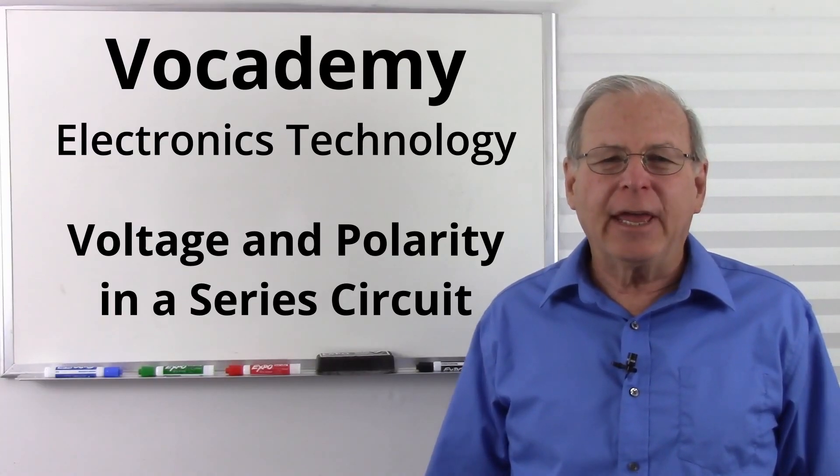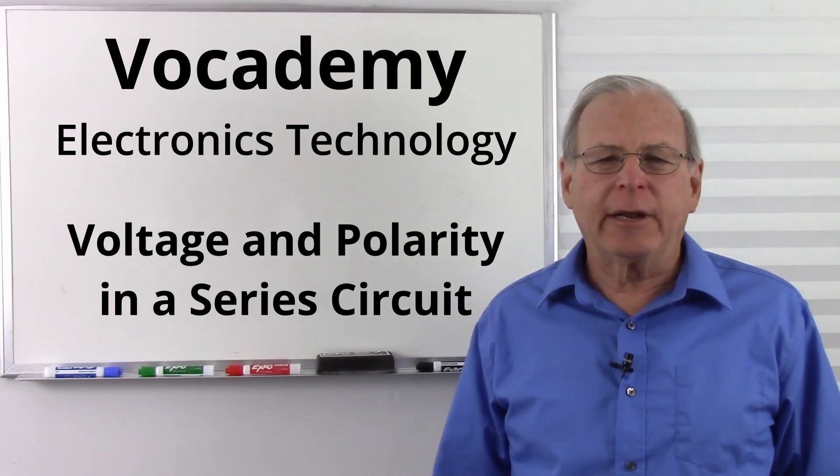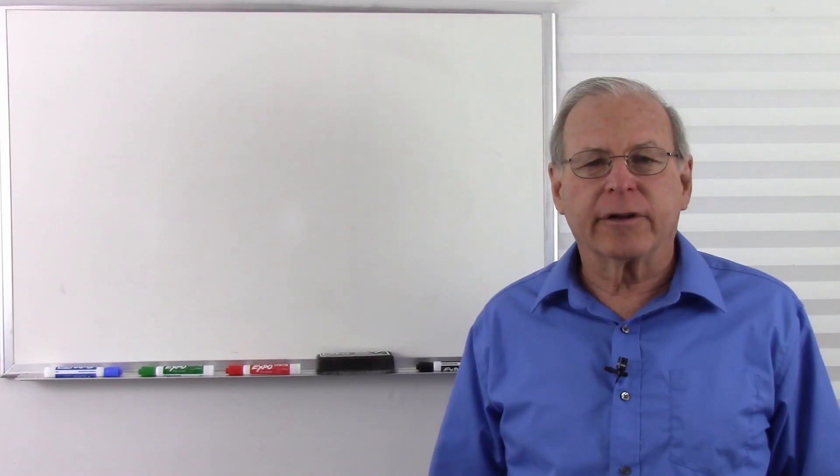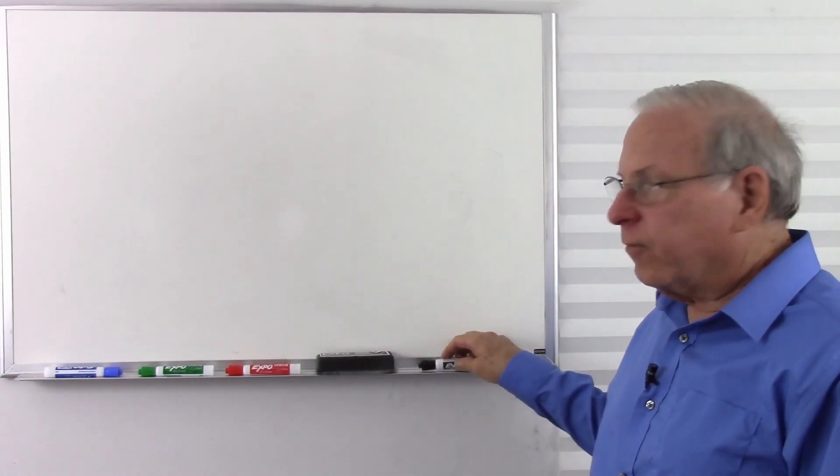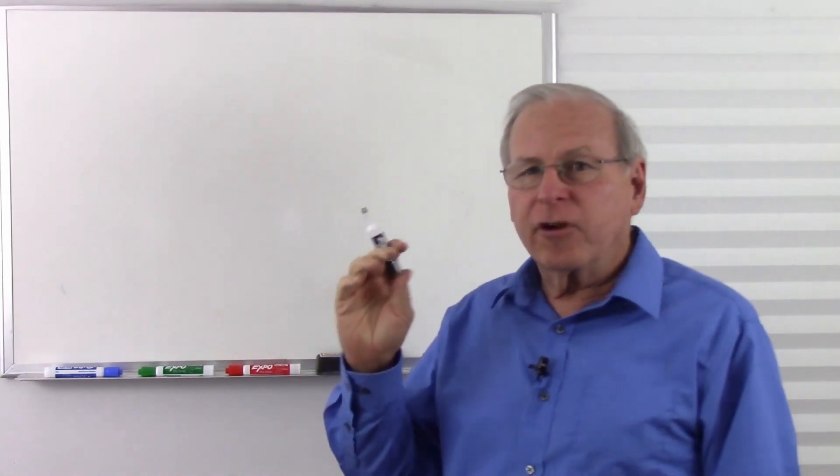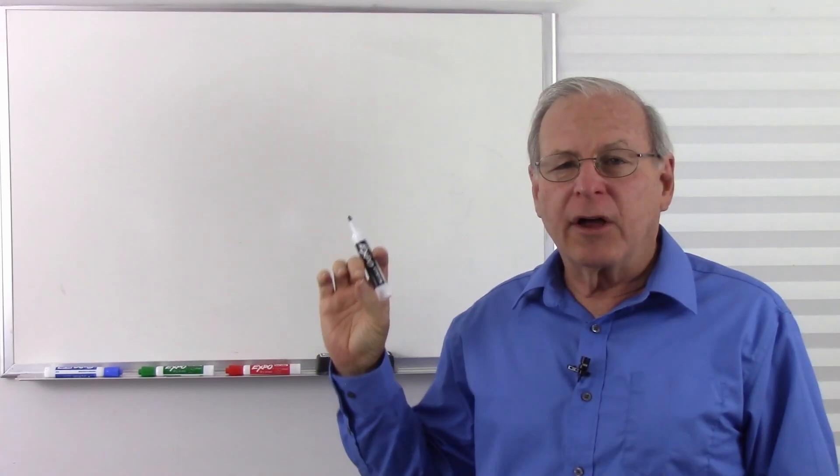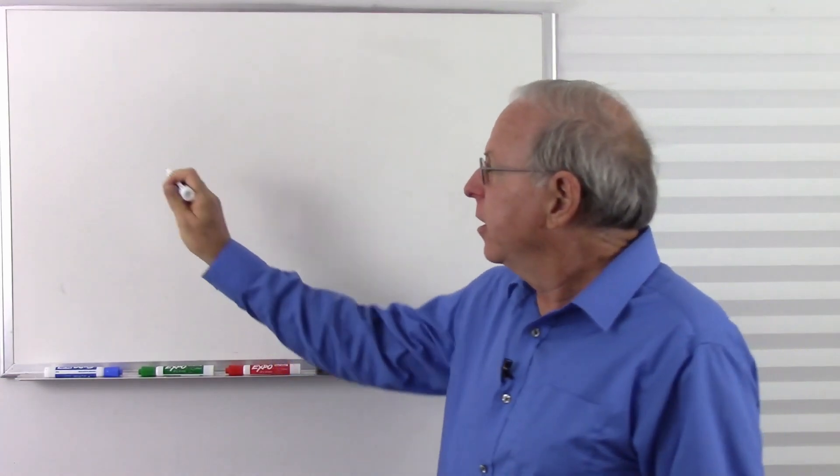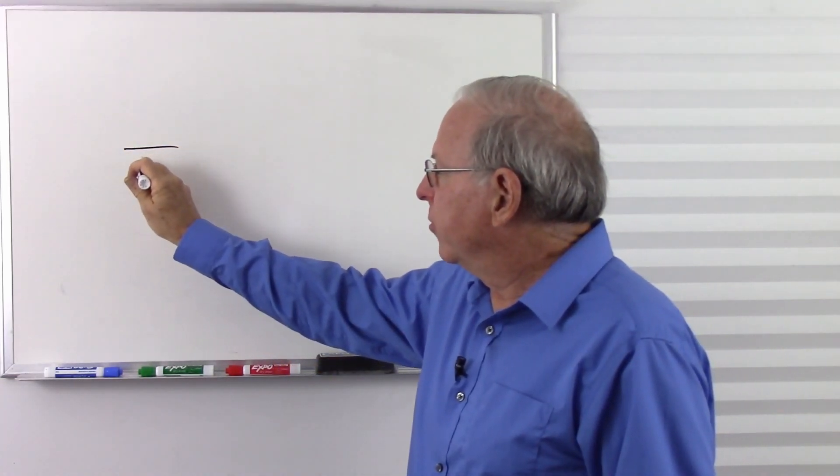I'm Bob Duhamel, and today I'm going to talk about voltage and polarity in a series circuit. A series circuit, which we've already discussed, is a circuit where there is only one possible current path in the circuit. So let's make a fairly simple series circuit.